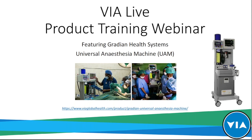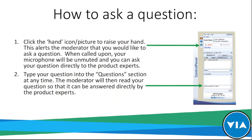As we move into the Q&A section, there are two different ways you can ask questions. At any time throughout the presentation you can ask a question, but we will wait until the end to answer them. The first way is to click the hand icon to raise your hand — I will receive an alert and unmute your microphone so you can ask directly. The second way is to type a question into the question section on the right, and I will ask it to the product team for you.